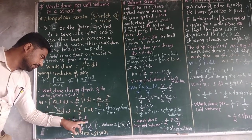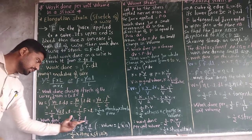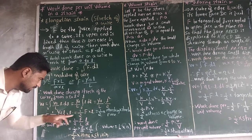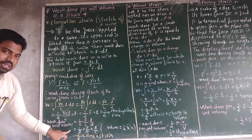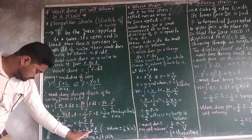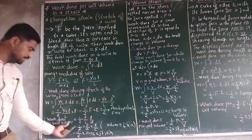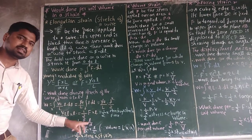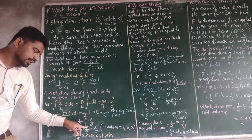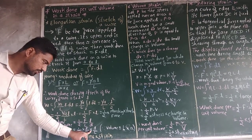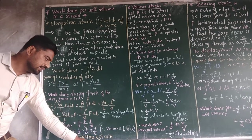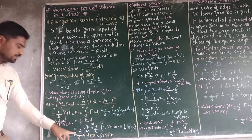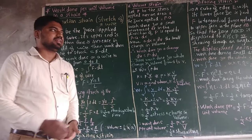Work done per unit volume: volume equals L into A. Dividing by volume L·A, we get W/V equals (1/2)·(F/A)·(small L / capital L). Here F/A is force per unit area, which is stress, and small L divided by capital L is longitudinal strain. Therefore, work done per unit volume in case of elongation strain equals (1/2)·stress·strain.